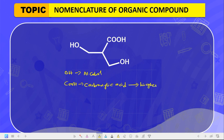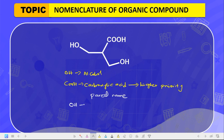The carboxylic acid has a higher priority compared to the alcohol, so we take the carboxylic acid as the parent name. It is expected that this compound ends with '-oic acid.' This also means that the OH is not the principal functional group — since the parent name contains the carboxylic acid, the OH will become a substituent. When the alcohol group is a substituent, you call it 'hydroxy.'